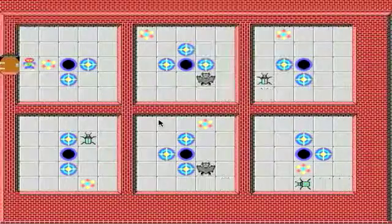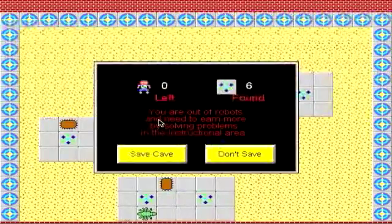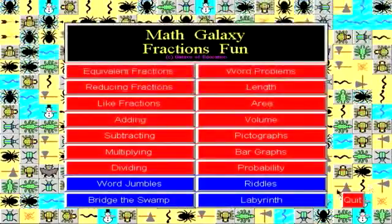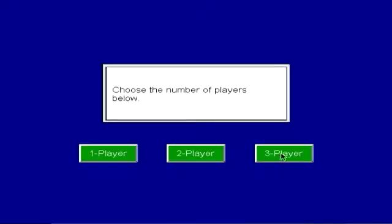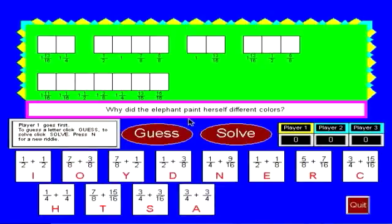So another example. Another game that comes with the program is a riddles game that's like Wheel of Fortune. You can have up to three players. For example, here the riddle is why did the elephant paint herself different colors? So you can try to solve the riddle at the beginning or end of each turn.